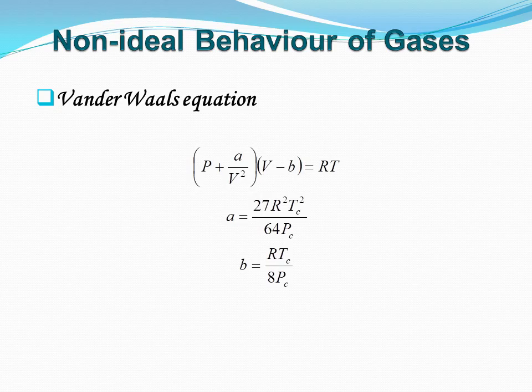Next is the non-ideal behavior of gases. To account for non-ideal behavior, Van der Waals proposed an equation of state: (P + a/V²)(V − b) = RT. The constants a and b depend on the gas and are evaluated as a = 27R²T_c² / (64P_c) and b = RT_c / (8P_c), where T_c and P_c are the critical temperature and pressure respectively. The critical temperature is the maximum temperature at which a gas can be liquefied, and above it, a gas cannot be liquefied regardless of pressure. The volume occupied by a gas under critical conditions is called the critical volume.